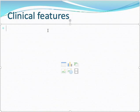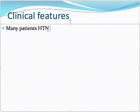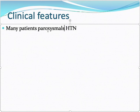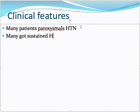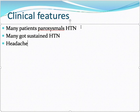The hormones can be released from the tumor in a pulsatile fashion or in a sustained fashion. Many patients have paroxysmal hypertension — episodic attacks of high blood pressure. Many also have sustained hypertension, which is a function of epinephrine and norepinephrine increasing blood pressure. This gives headache whenever the hormones are released.